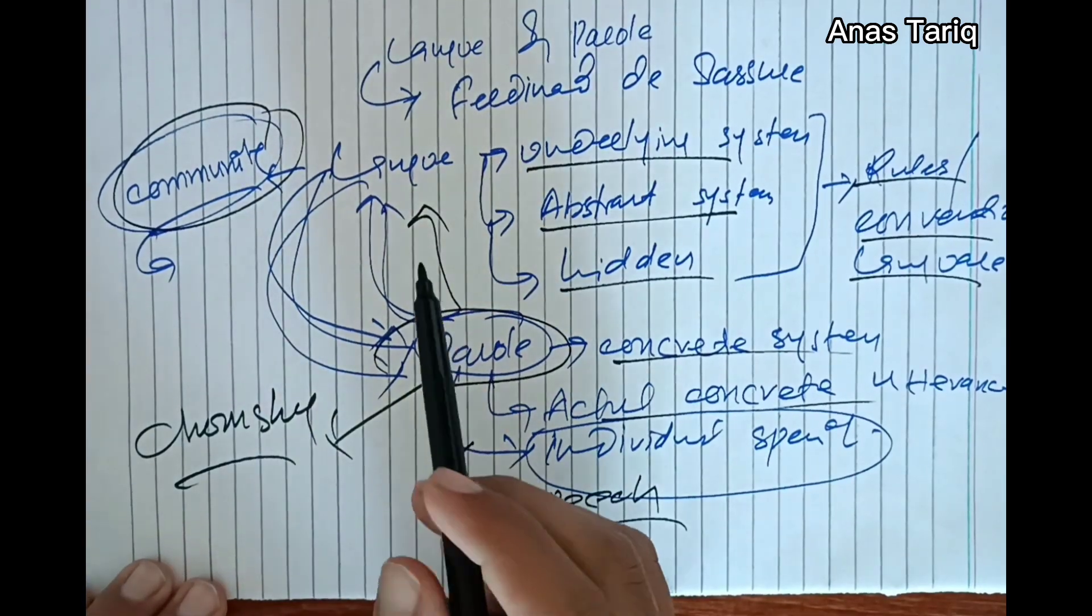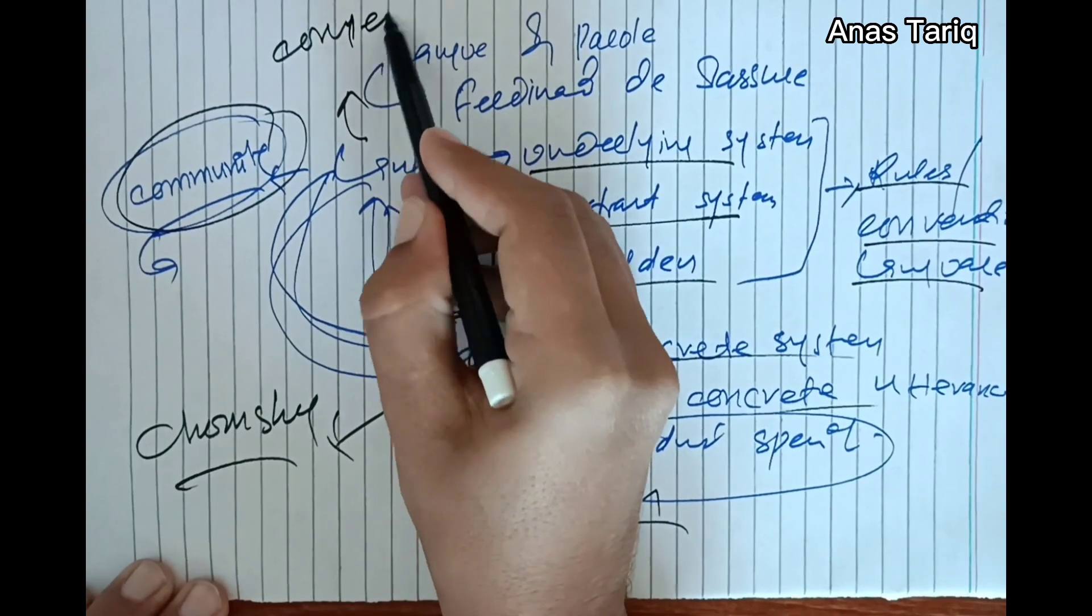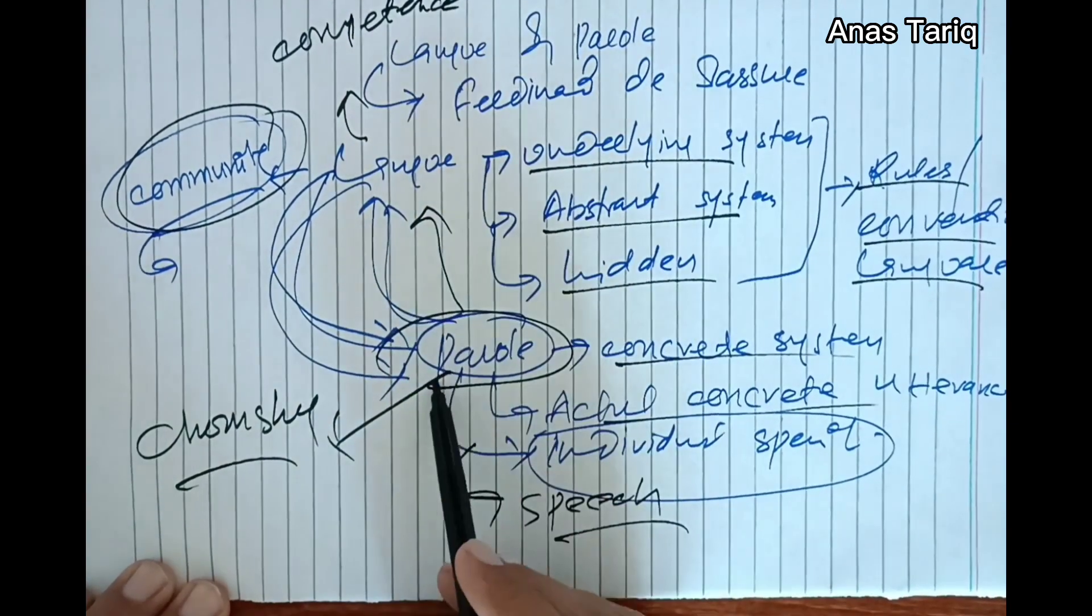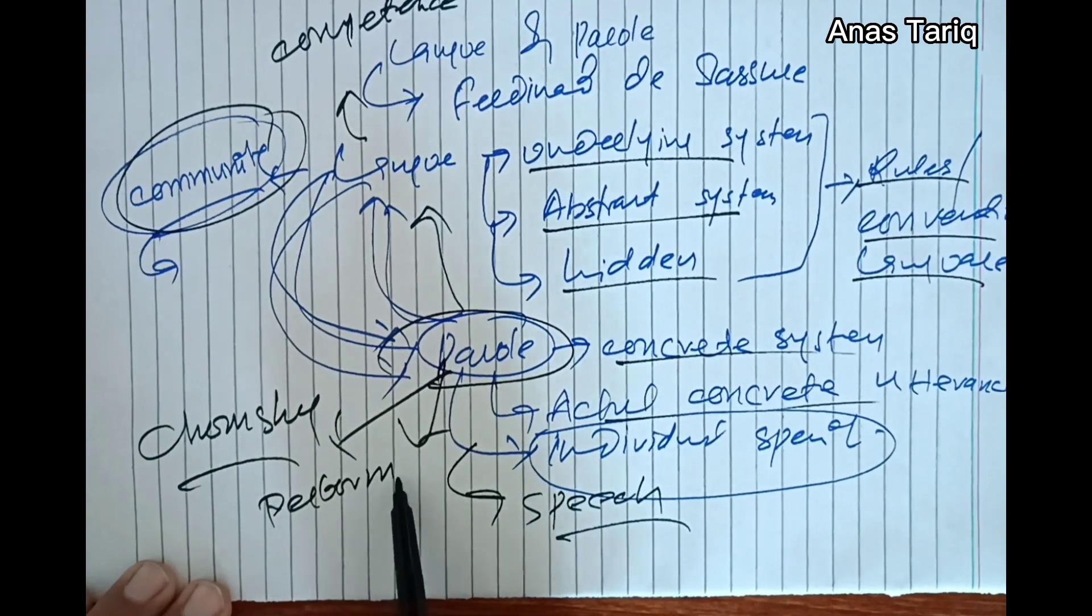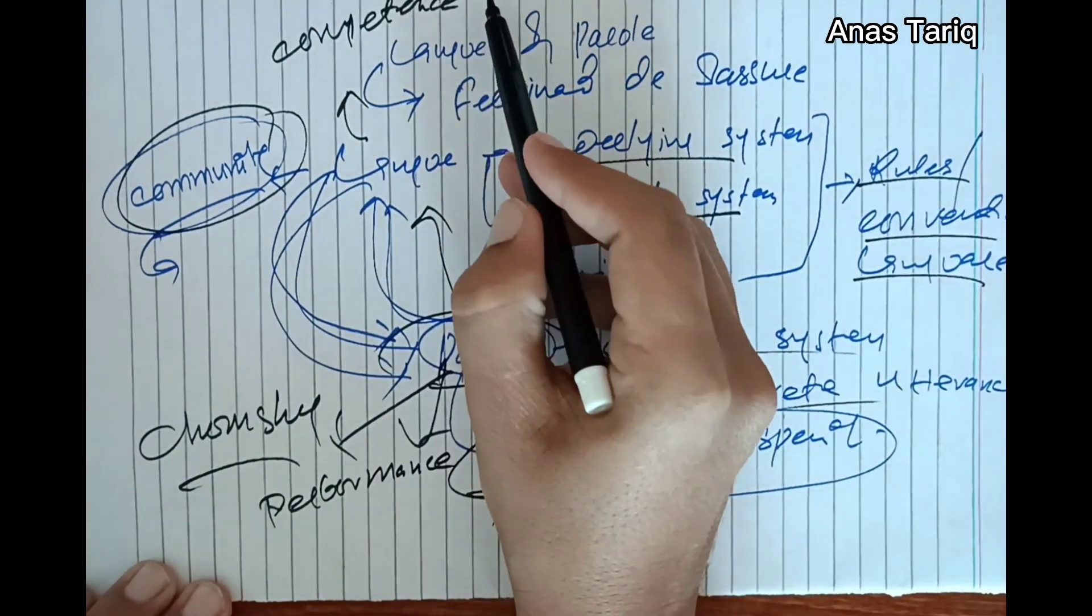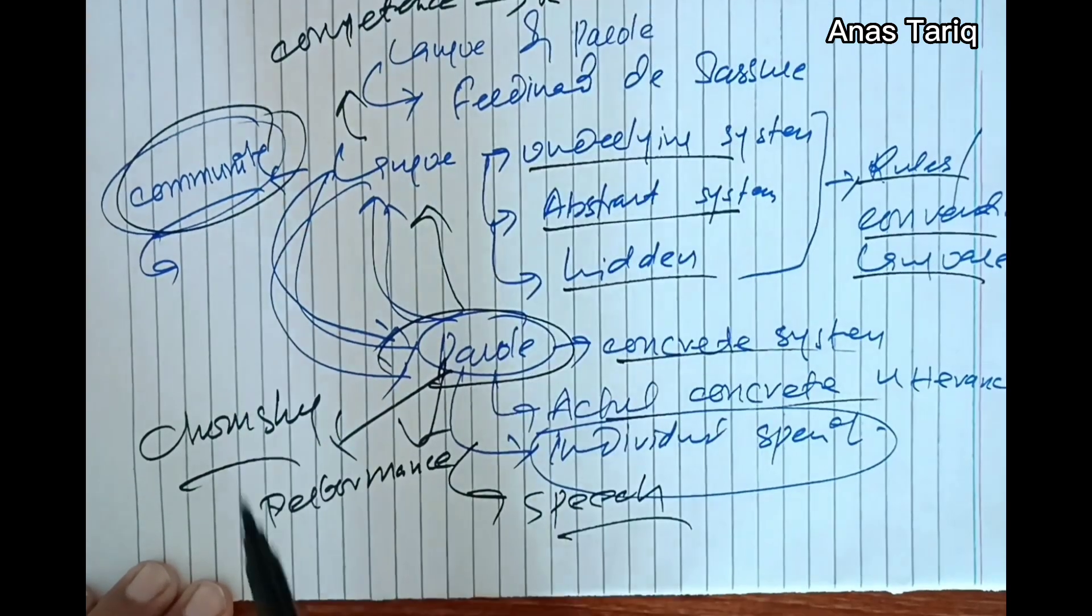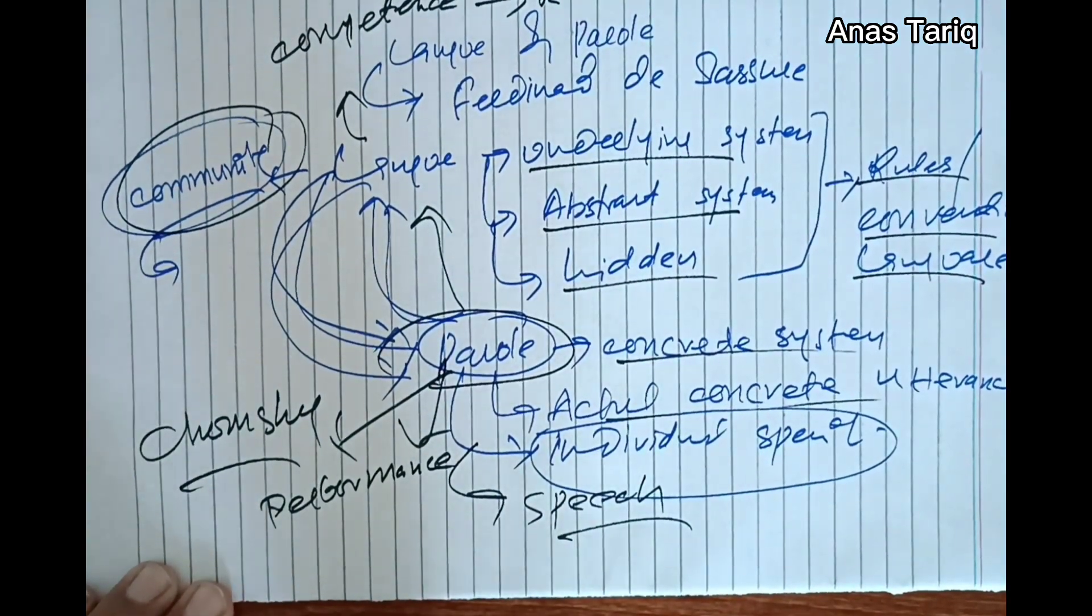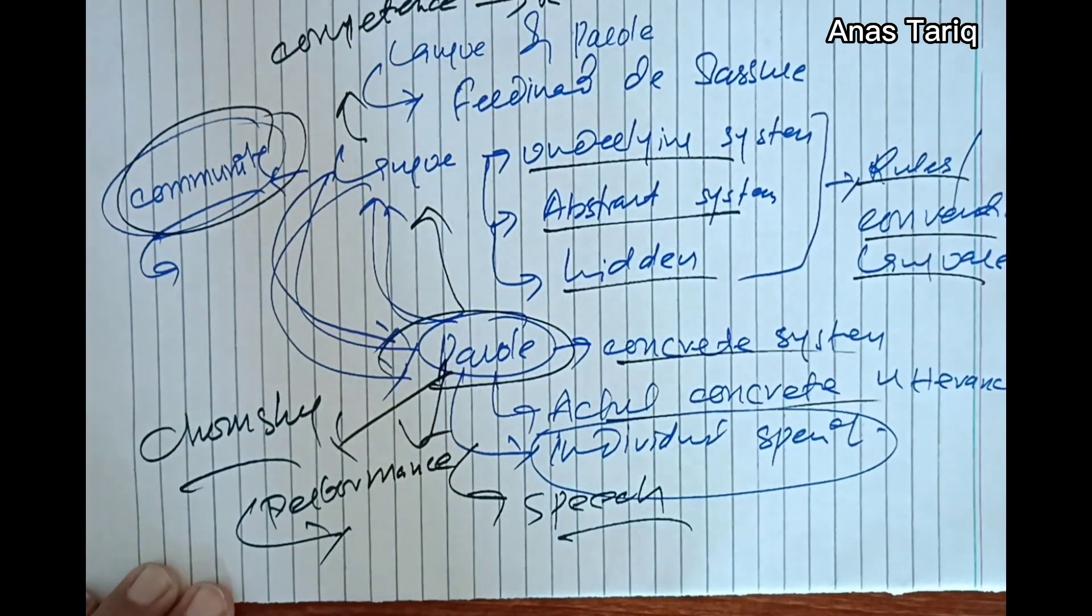And he turned Langue as competence while Parole is performance. What is competence? Competence is rules and regulations which an individual has in his or her mind, while performance is the realization of these rules and the production of actual speech utterances.